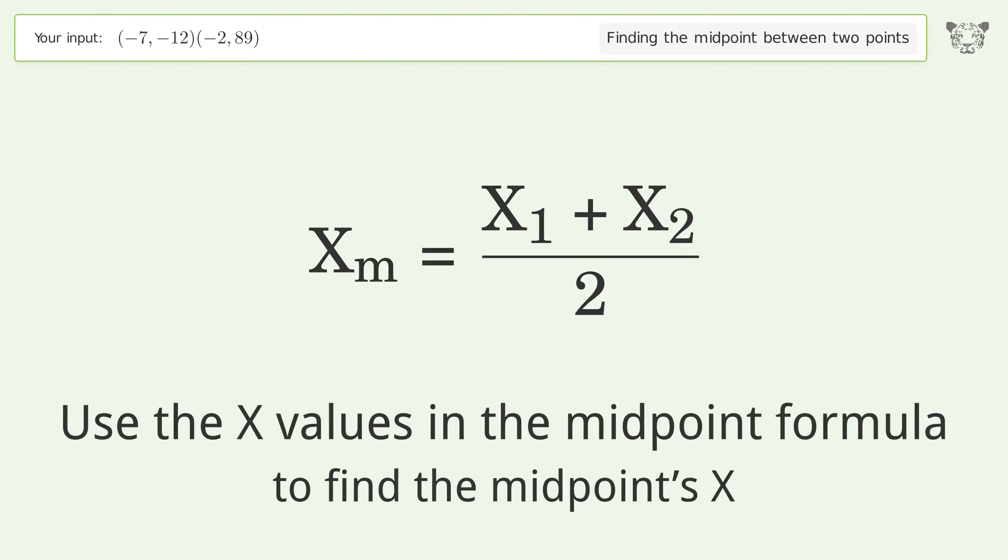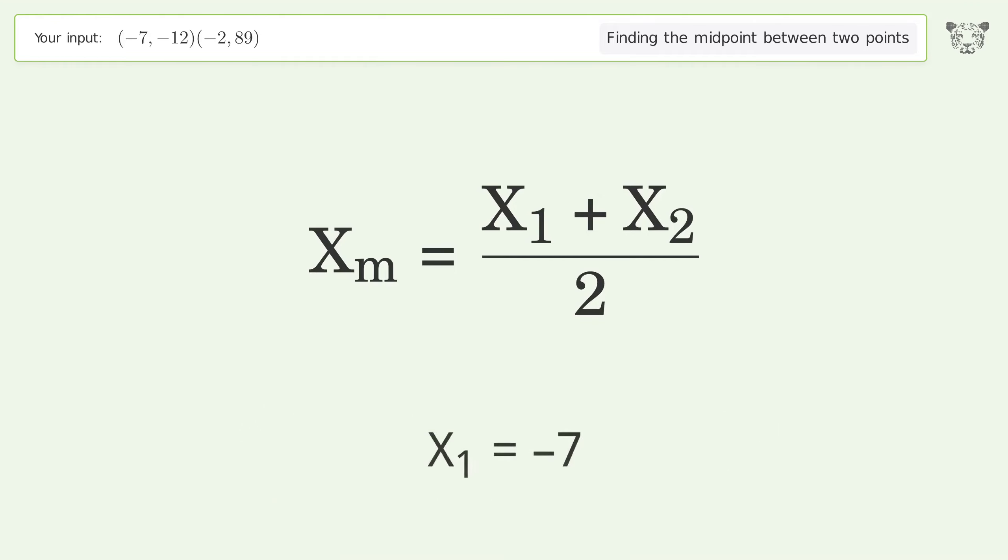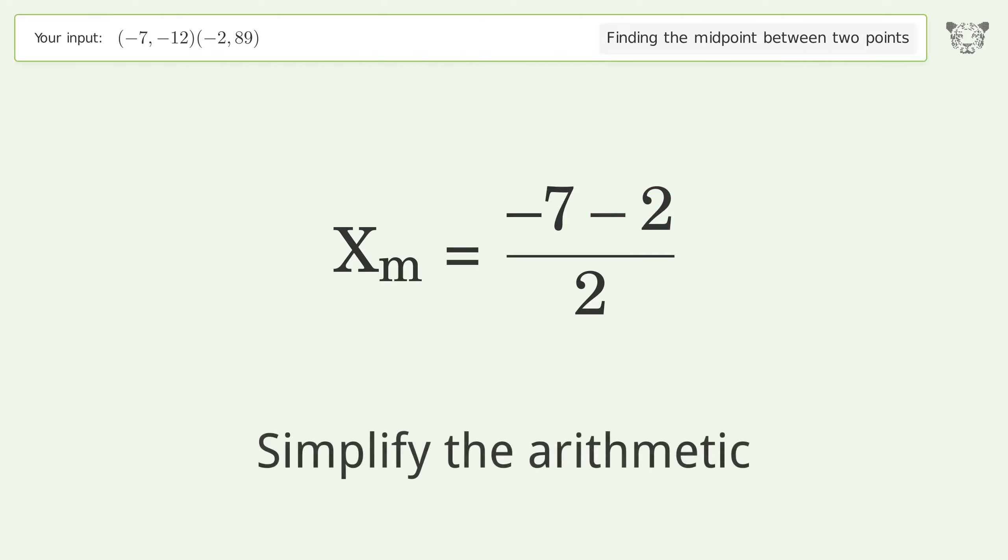Use the x values in the midpoint formula to find the midpoint's x. x1 equals -7, x2 equals -2. Simplify the arithmetic.